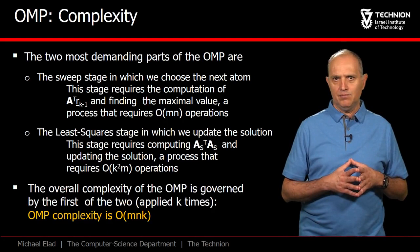the overall number of operations that OMP requires is on the order of k times m times n, where k is the cardinality of the final solution.